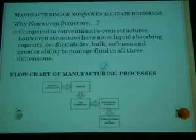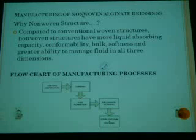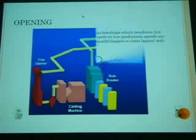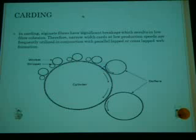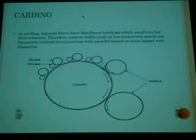The flow chart for manufacturing of this nonwoven structure consists of: opening the fibers, then carding, then web formation, bonding of the fibers by mechanical means, and lastly sterilization and packing. For manufacturing nonwoven fabric we do not require the intensive opening of fibers which is usually used for cotton or other similar fibers.